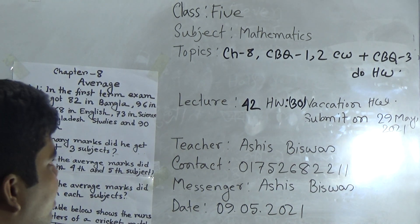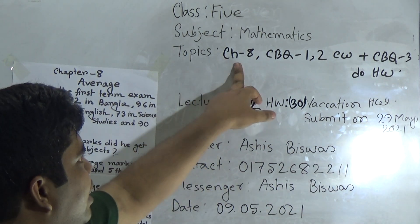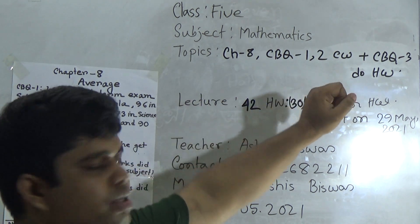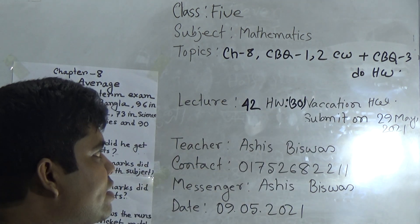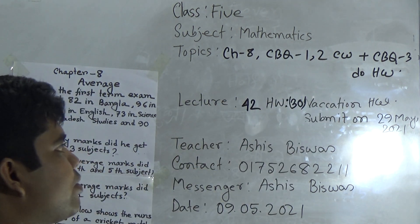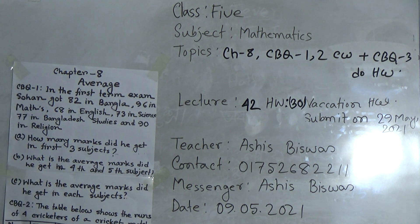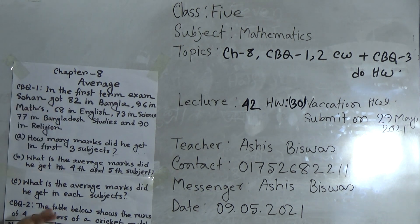Today's topic name is chapter 8. From this chapter, we shall solve CBQ number 1 and 2 as CW, and CBQ 3 will be your SW. Here you notice CBQ 1, 2, 3 is written here. CBQ 1 and 2 will be solved in our class and CBQ 3 will be your SW.